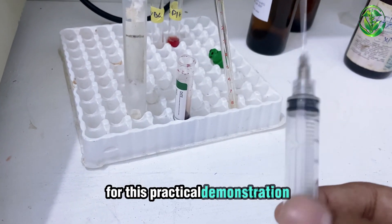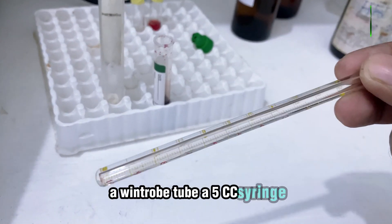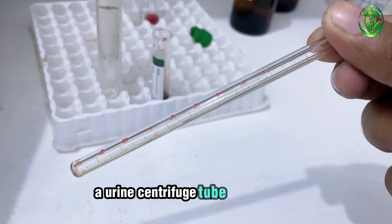For this practical demonstration, we will need a patient blood sample, a Wintrobe tube, a 5cc syringe, a urine centrifuge tube, and a centrifuge.